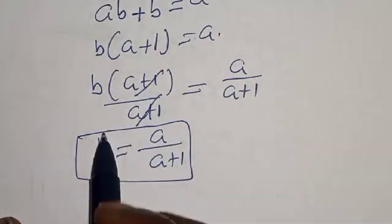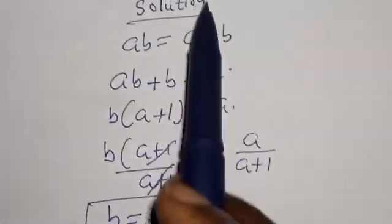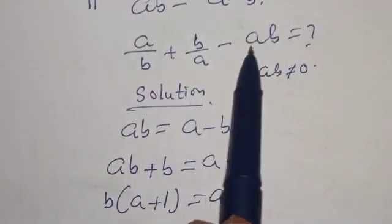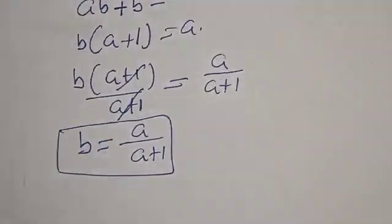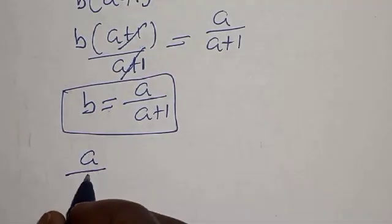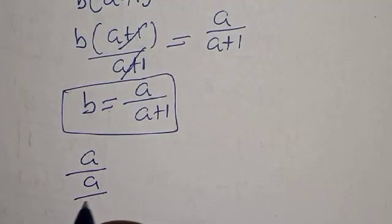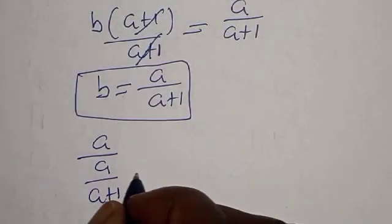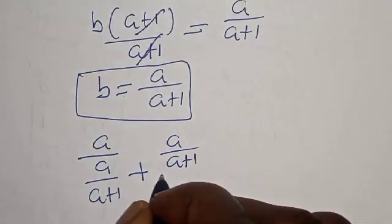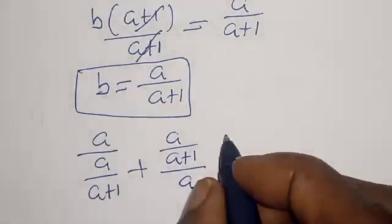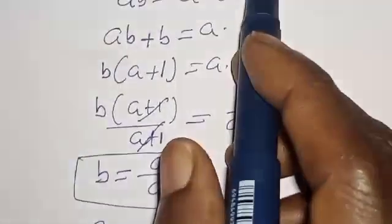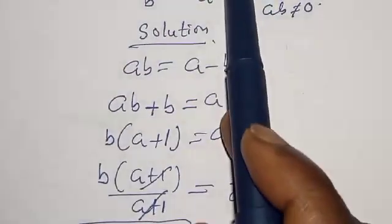Now let's substitute for B in the expression A divided by B plus B divided by A minus AB. Substituting B equals A over A plus 1, and noting that AB is equal to A minus B.